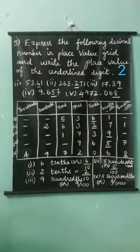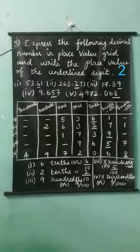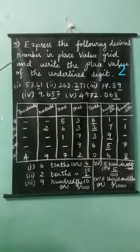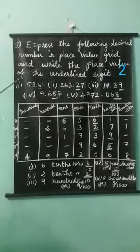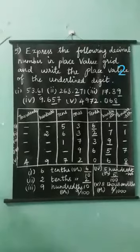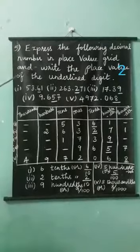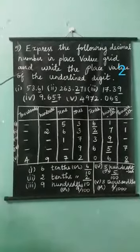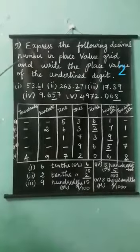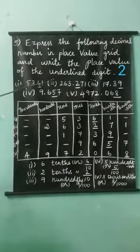Dear students, see the next sum. Express the following decimal number in place value grid and write the place value of the underlined digit. Here, the numbers are given below.